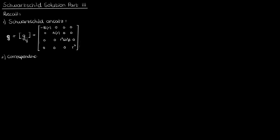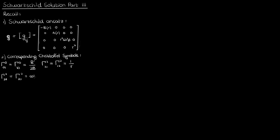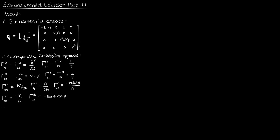Recall also from our previous video that after using the formulas we derived for the second-kind Christoffel symbols corresponding to a diagonal metric tensor, this is what we got for the non-zero Christoffel symbols for the diagonal Schwarzschild ansatz. Note that the zero index represents the time coordinate, the one index our radial coordinate, the two index our theta coordinate (our angle relative to the positive x-axis), and the three index our phi coordinate (our angle relative to the positive z-axis).